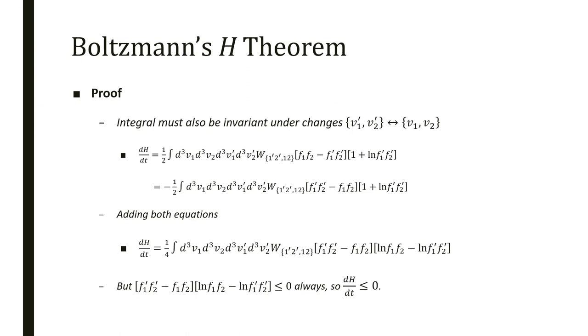Looking at the symmetries of the problem, we should expect that this integral is invariant if we change v1 and v2. We do this and calculate exchanging v1 and v2. But also, by symmetries, it should be invariant if we change the pairs v1 and v2 with v1' and v2'. We add all these equations in one more symmetric equation. If we look at this equation, we have f1' f2' minus f1 f2 times log f1 f2 minus log f1' f2'. If the first term is positive, the second is negative. If the first term is negative, the second is positive. So the product will always be lower or equal to zero, and we've just proved that dH/dt is lower or equal to zero.